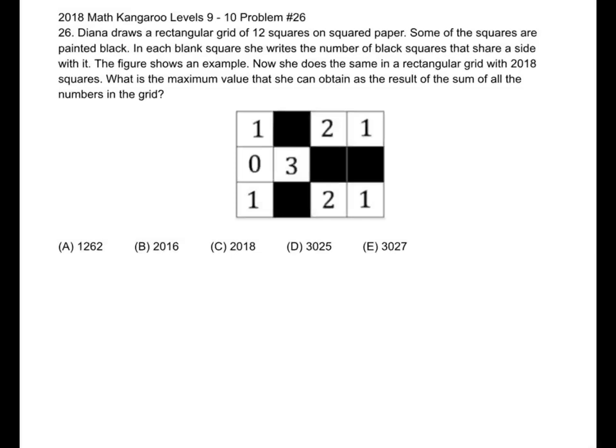Diana draws a rectangular grid of 12 squares on squared paper. Some of the squares are painted black. In each blank square, she writes the number of black squares that share a side with it. The figure shows an example. Now, she does the same in a rectangular grid with 2018 squares. What is the maximum value that she can obtain as the result of the sum of all the numbers in the grid?